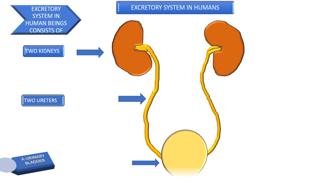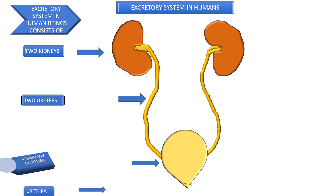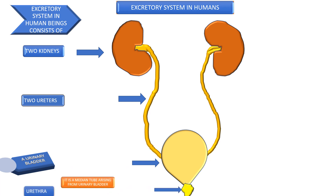Urinary bladder — it is a muscular bag lying in the lower abdomen. Urethra — it is a median tube arising from the urinary bladder.